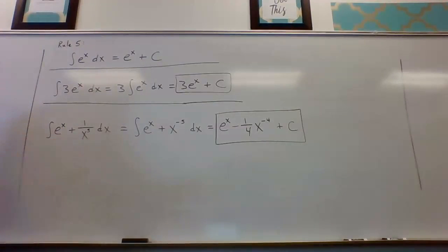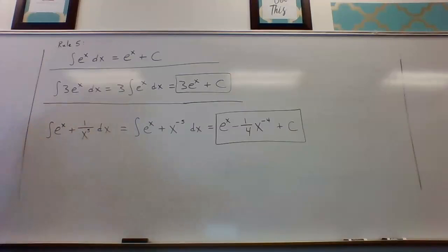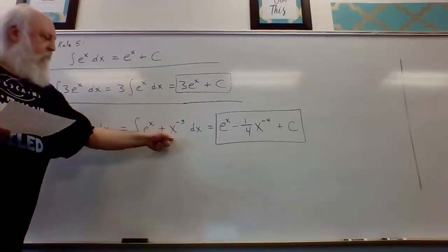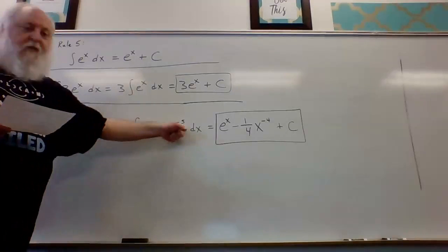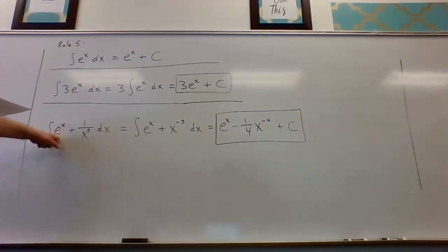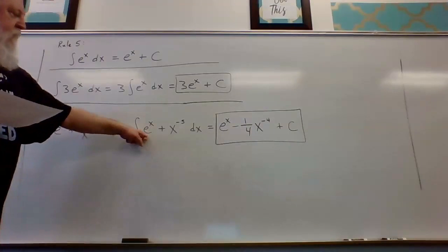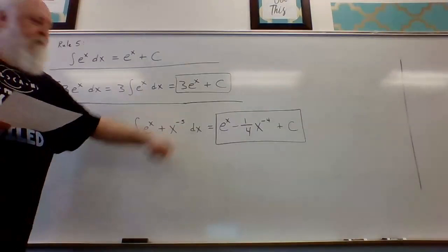In example two, we find the antiderivative of e to the x plus one over x to the fifth. Before antidifferentiating, we rewrite one over x to the fifth as x to the minus five power. So e to the x plus one over x to the fifth is the same as e to the x plus x to the minus five.